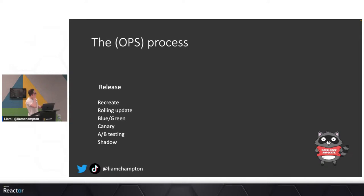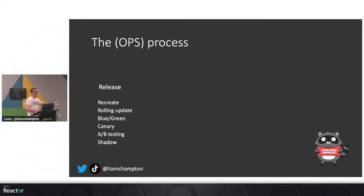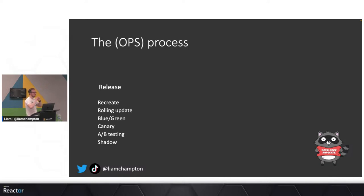Then we have the release cycle — this is the operations side. You look at rolling updates, blue-green deployments, or canary deployments where you have two environments in the wild at once and slowly rein it in. If you've been on Instagram and seen a feature your friend doesn't have yet — that's what they're doing there, slowly phasing it out and gathering metrics from different users. Shadow deployment is where you literally have two running at once, but one endpoint goes back to users while the new one's response goes straight back to you for testing.